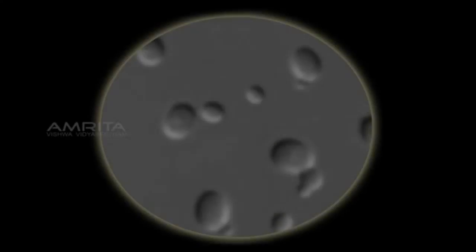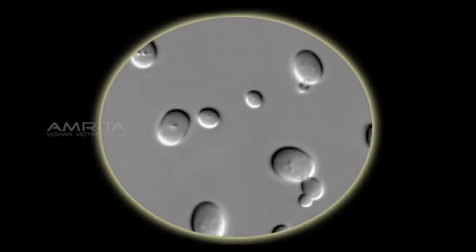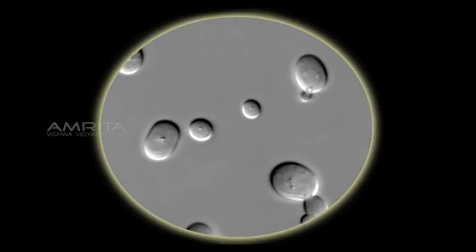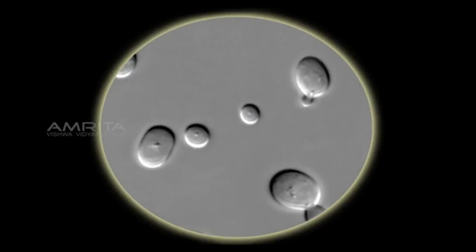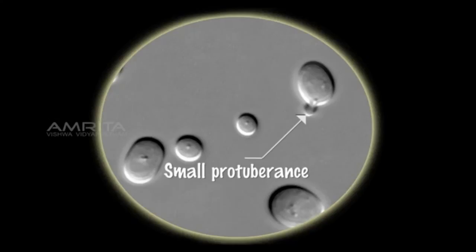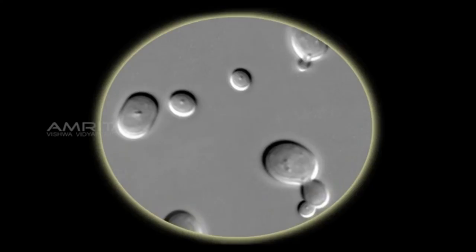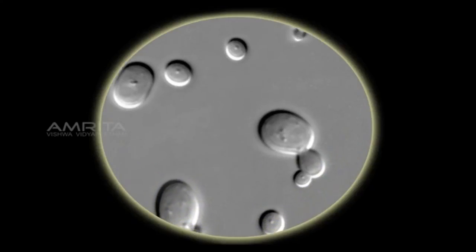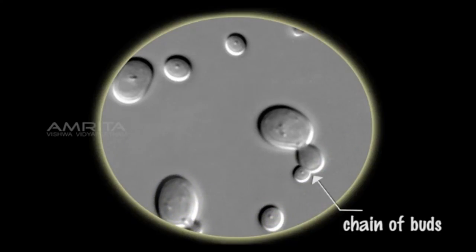Observations: We can observe that cells of the yeast are spherical or oval in shape. First, a small protuberance appears on the body of the parent cell known as a bud. We can observe these buds in the permanent slide of budding in yeast. We can also observe a chain of buds on the parent yeast cell.